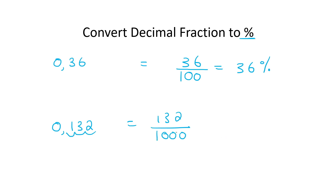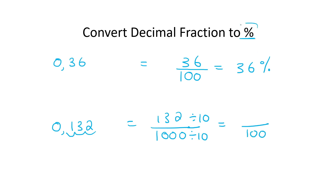Now we know that to make a percentage this denominator needs to be 100. So I'll divide the bottom by 10, and what I do to the bottom I always do to the top. At the bottom I now have 100. For the top, when you divide by 10 the decimal moves one place to the left — if you can't see a decimal it's at the end — so 132 becomes 13.2. So 13.2 over 100 is 13.2 percent.